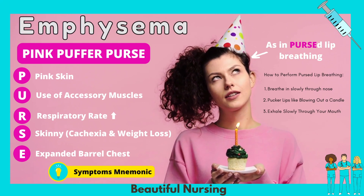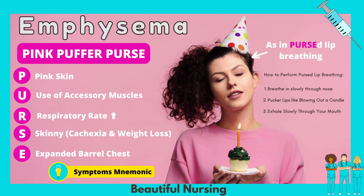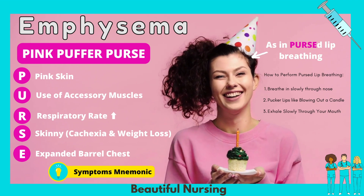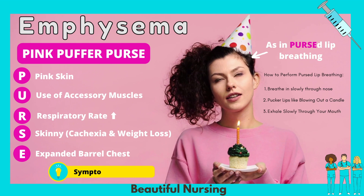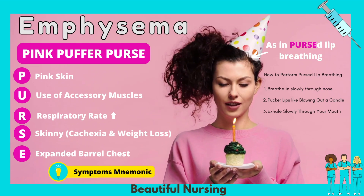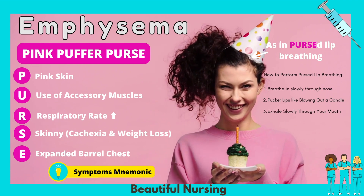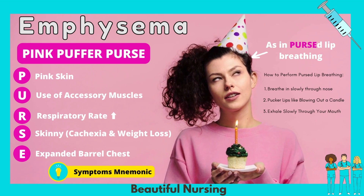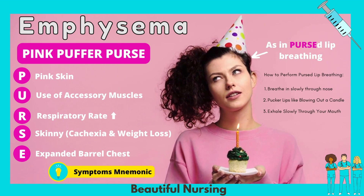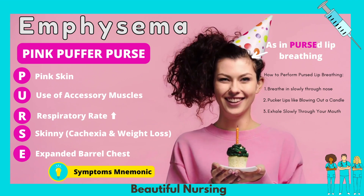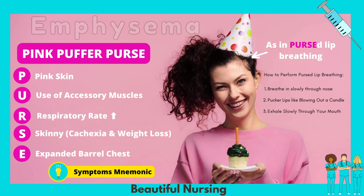The symptoms of the emphysema part of COPD can be remembered with Pink Puffer PURSE: P for pursed lip breathing and pink skin, U for use of accessory muscles, R for increased respiratory rate, S for skinny — the patient will have cachexia with muscle wasting and weight loss — and E for an expanded barrel chest, usually due to air trapping since air cannot be expelled because there is no elasticity in the alveoli walls.